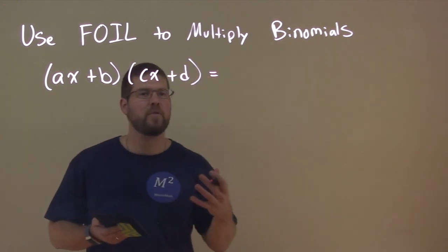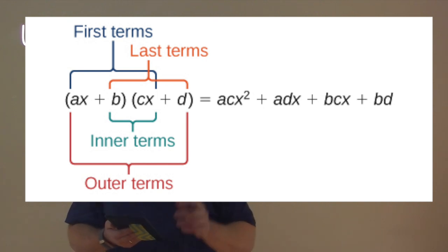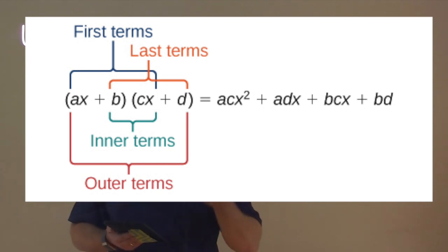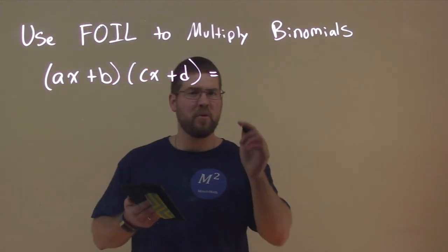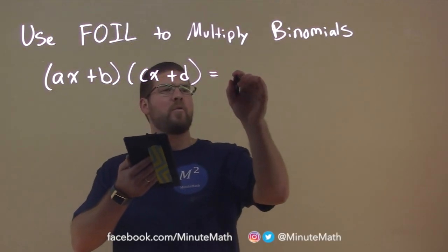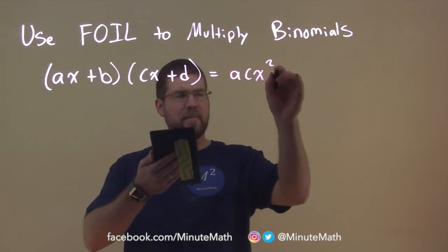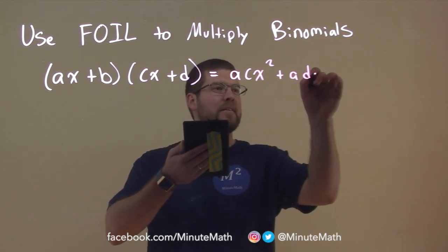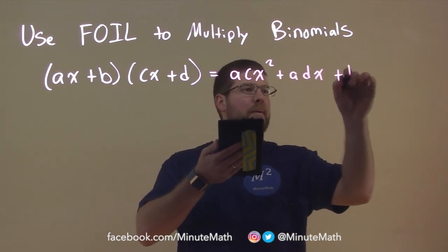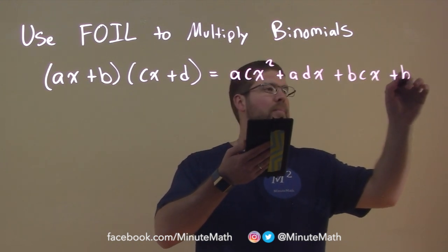You can pause the video to see an infographic showing what they are. This would equal, eventually, ACX squared plus ADX plus BCX plus B times D.